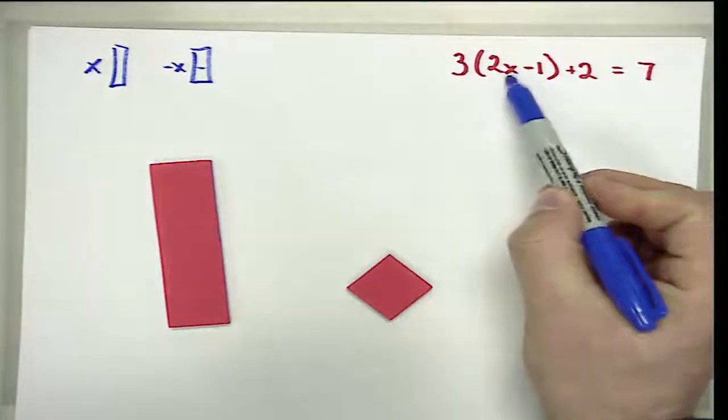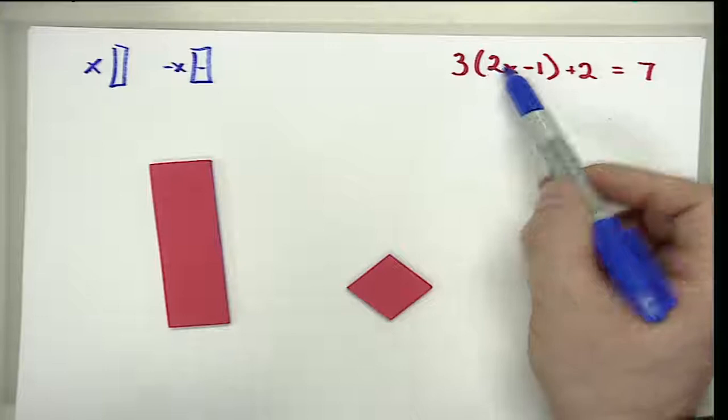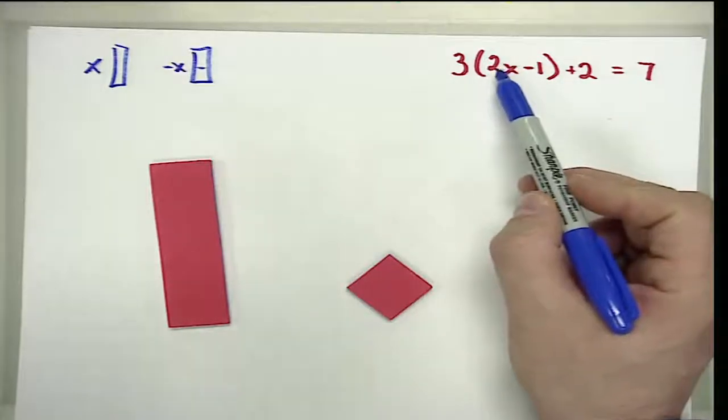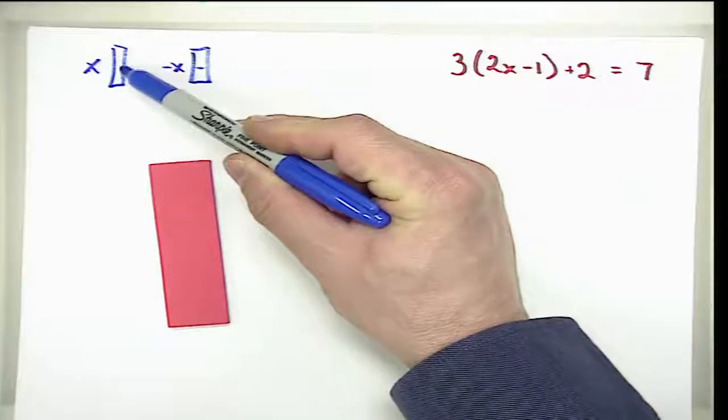The reason that I don't: number one, it's a little more drawing; and number two, when we deal with terms like 2x there isn't a plus sign in front of it because it's implied that it's positive.